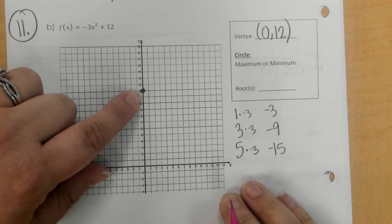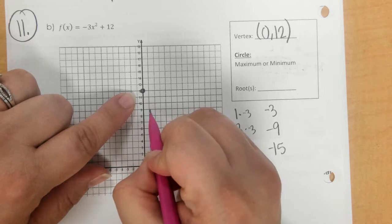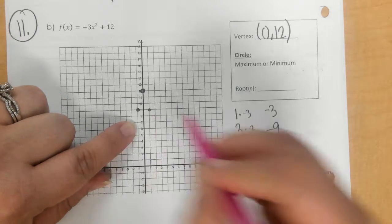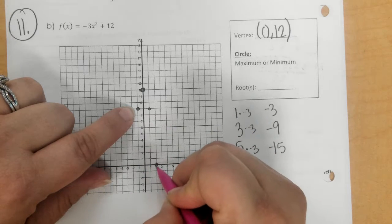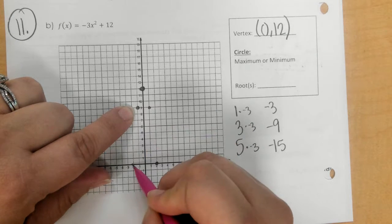From the 0, 12, we're going to go down 3, right 1, down 3, left 1. From the new point, we're going to go down 9, right 1, and then down 9, left 1.